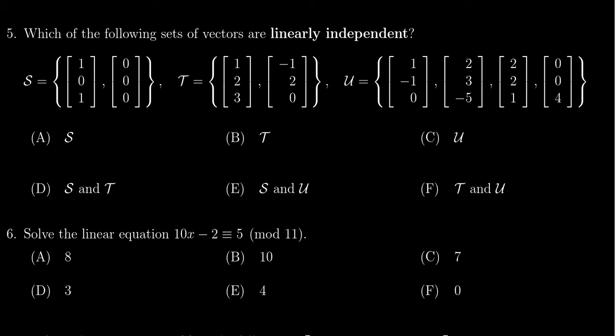Now I'm looking at choice S right here. I do notice that S contains the zero vector. Any set that contains the zero vector is automatically linearly dependent. So therefore I know set S is not independent—it's a dependent set. Since I'm looking for independence, I'm going to put an X on S there. Now let's look at set T.